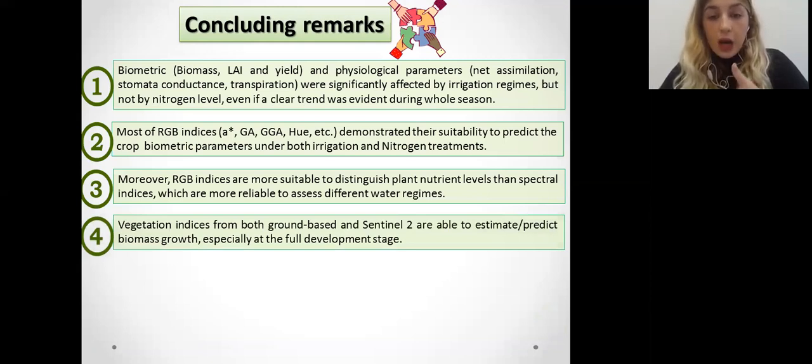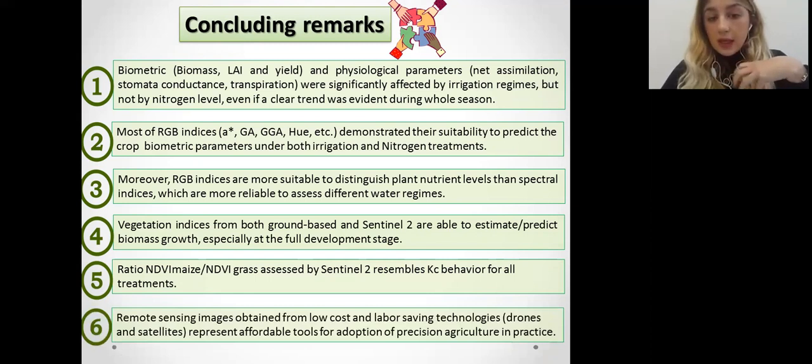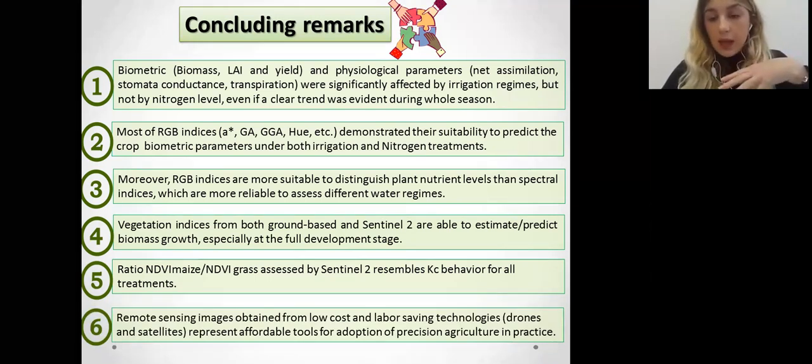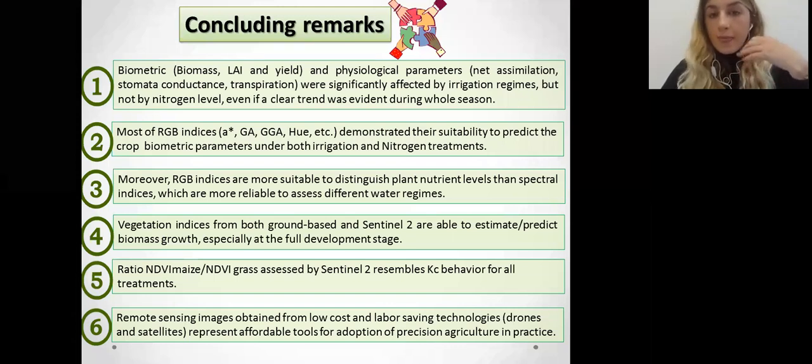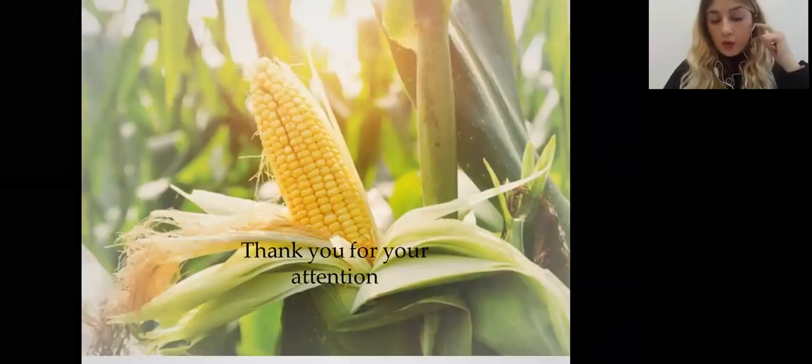Also vegetation indices from ground base and Sentinel-2 were able to estimate and predict biomass growth especially in full development stage. A ratio between NDVI of maize and NDVI of grass assessed by Sentinel-2 showed the same behavior of crop coefficient that was explained before in the literature. So we can say that remote sensing images obtained from low cost and labor saving technologies, drones and satellites, represent affordable tools for precision agriculture in practice and they are used more and more in work in many countries. Thank you for your attention.